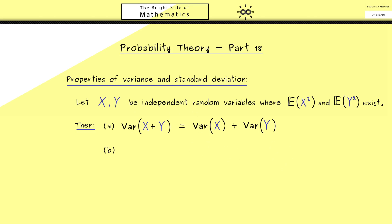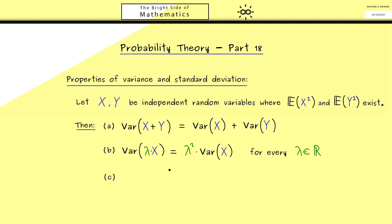So this is the addition rule, and now you might ask what happens when we scale a random variable. The question is: what is the variance of lambda times X, where lambda is a real number? In fact we can pull out this lambda factor, but with a square. So we can simplify the variance, but we shouldn't forget the square outside.